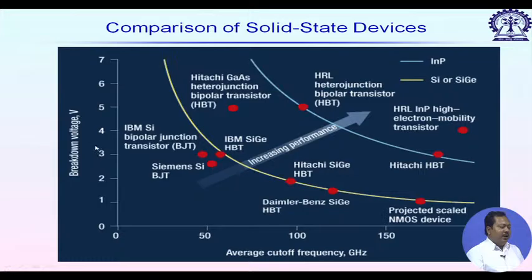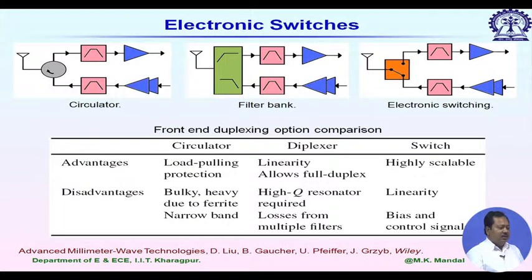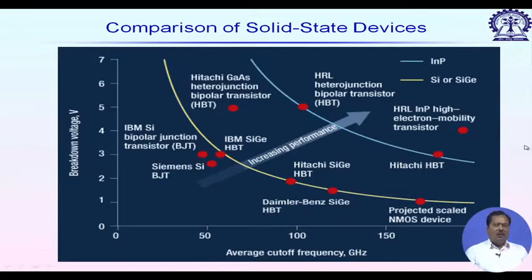A comparison of different solid-state devices available commercially plots breakdown voltage against cutoff frequency in GHz. Silicon and silicon-germanium based devices are shown in yellow, indium phosphide based devices in blue. For high-frequency and high-power (high breakdown voltage) performance, indium-phosphide-based HBTs are the winners. Following this overview, the next topic will be an application of active devices — the electronic switch — after a short break.